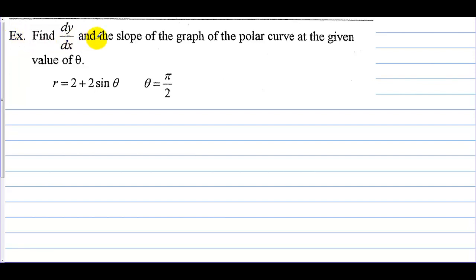Example: Find dy/dx and the slope of the graph of the polar curve at the given value of theta. R is equal to 2 plus 2 sine theta, and theta is equal to pi over 2.